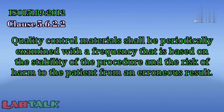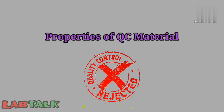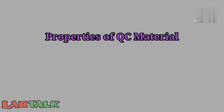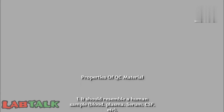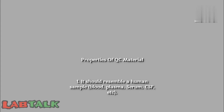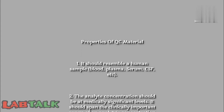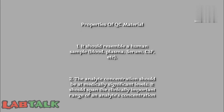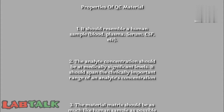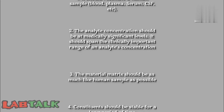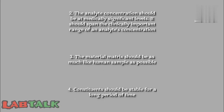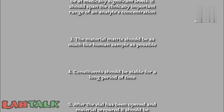When choosing a quality control material, there are important properties to consider. First, it should resemble a human sample — such as blood, plasma, serum, CSF, or other body fluids. Second, the analyte concentration should be at medically significant levels and span the clinically important range. Third, the material matrix should be as close to a human specimen as possible. Fourth, the constitution should be stable for a long period of time.